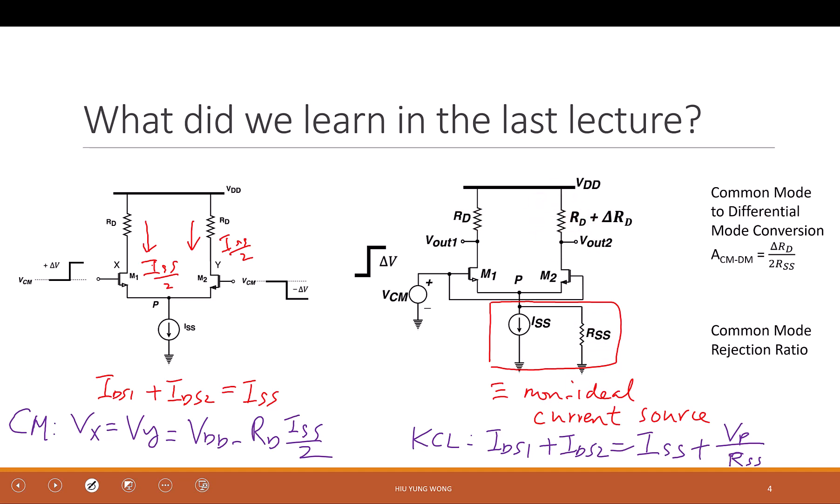It means that if I have a common mode noise, both side left and right go up and go down at the same time. They are not differential. And we want to reject it. We don't want to see it. But because of this not ideal current source and also this mismatch, you are going to get some differential output. Basically, this is saying that this is equal to Vout1 minus Vout2 divided by VCM. There's a difference in the output. And when we have some input, common mode input, which is noise, we get some differential output.